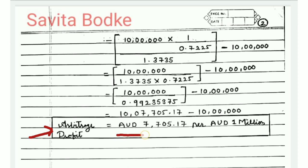The final arbitrage profit is AUD 7,705.17 per AUD 1 million invested. This means that by investing AUD 1 million in this arbitrage opportunity, you can earn a profit of AUD 7,705.17. My next lecture will cover arbitrage profit calculation when the mid rate is given. Please share this lecture with your friends, and all the best for your studies. Thank you.